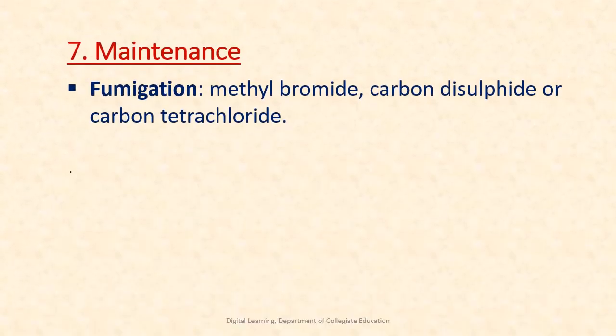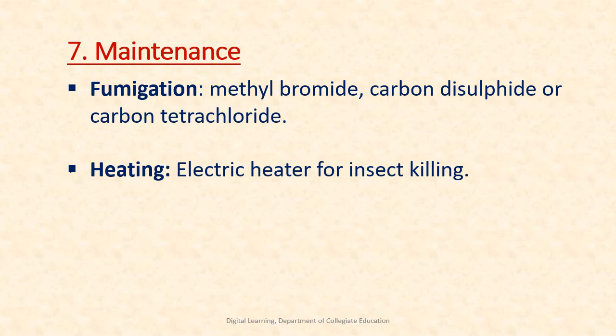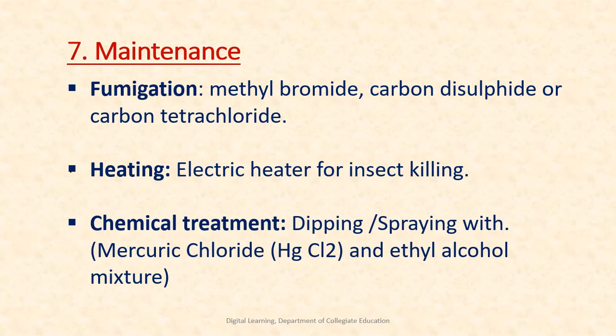The last step is maintenance. Fumigation: poisonous liquids like methyl bromide, carbon disulfide, or carbon tetrachloride are placed in small containers and kept in each herbarium case for about a week. Sometimes heating is also adopted — this method is used for insect killing, and some herbaria use electric heaters instead of fumigation. Another method is chemical treatment: dipping the material in insecticide before pasting, or spraying chemicals after pasting, using mercury chloride and ethyl alcohol.